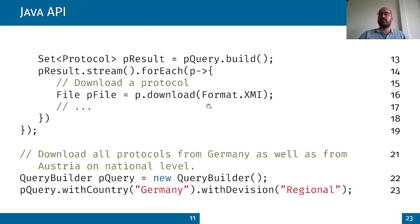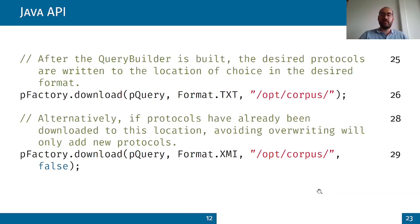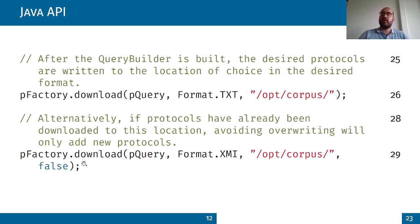Once downloaded, the next step is an example for Germany and Austria at the national level. For this we use the query builder and extract only the country of Germany with the division at the regional level, extracting them in the XMI format. You also have the dynamic option to add only new protocols, avoiding overwriting old protocols.